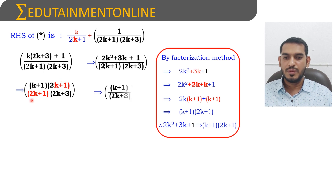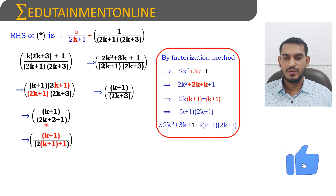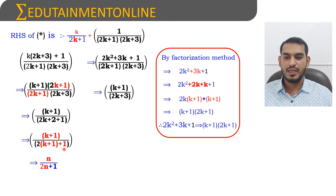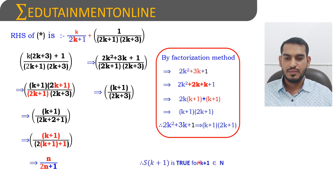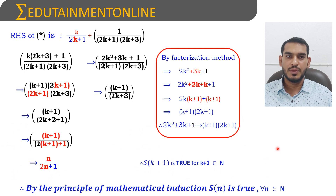Canceling (2k+1) from numerator and denominator gives (k+1)/(2k+3). We can write 2k+3 as 2(k+1)+1, so this equals (k+1)/[2(k+1)+1]. Comparing with the RHS of the given statement n/(2n+1) with n=k+1, this matches. Therefore S(k+1) is true. Therefore by the principle of mathematical induction, S(n) is true for all natural numbers.